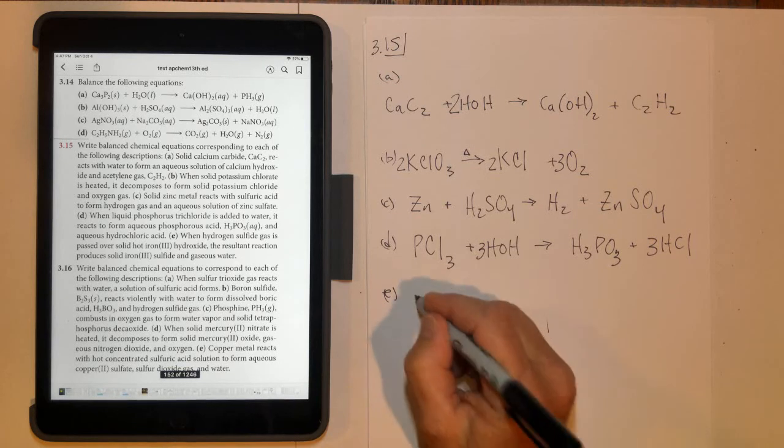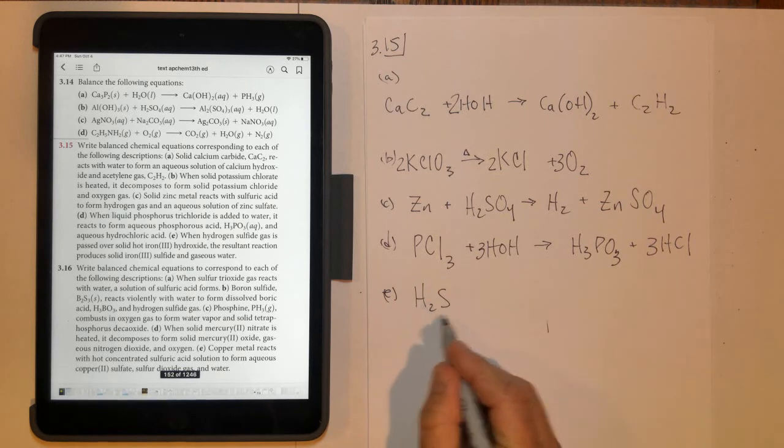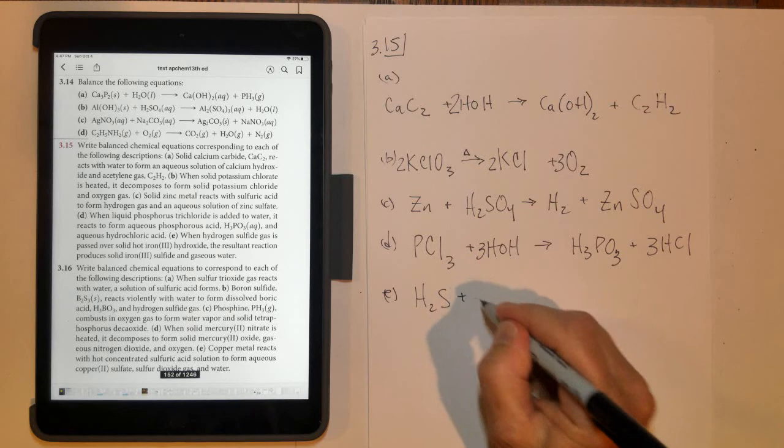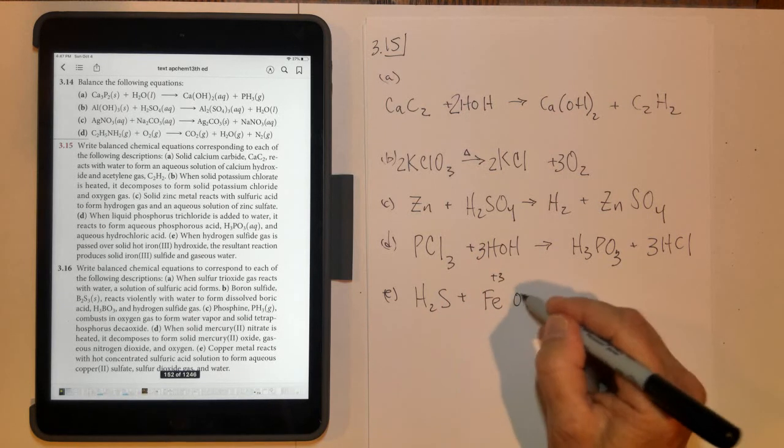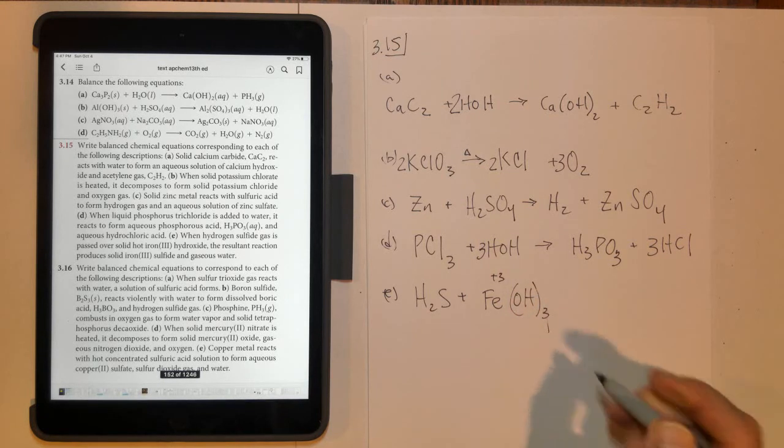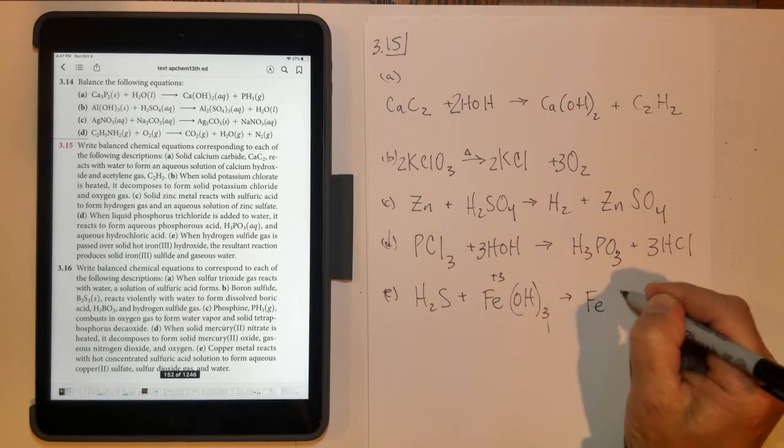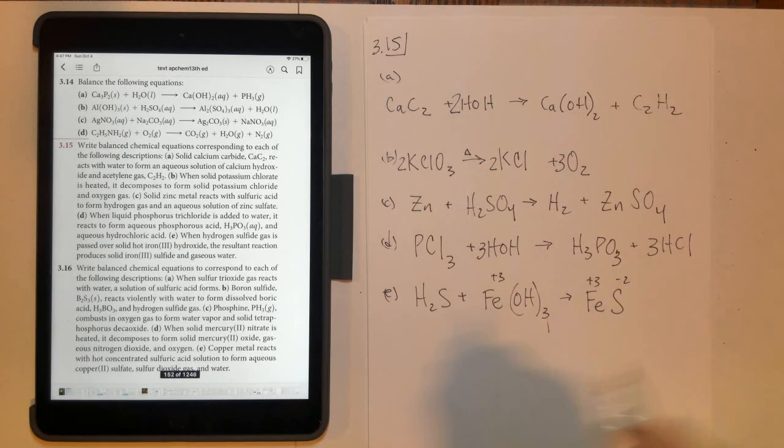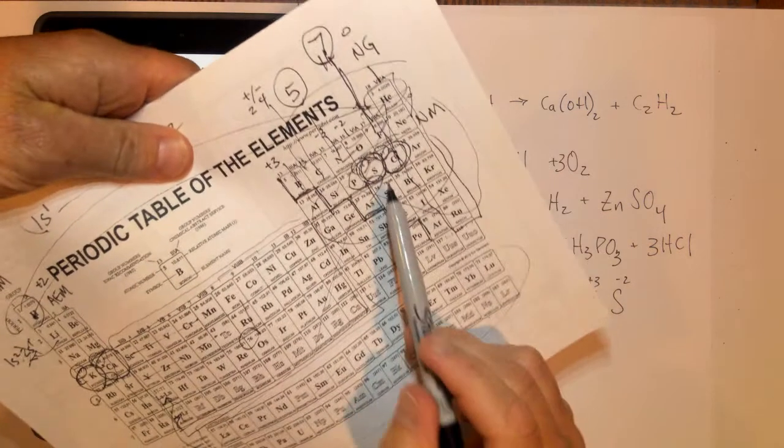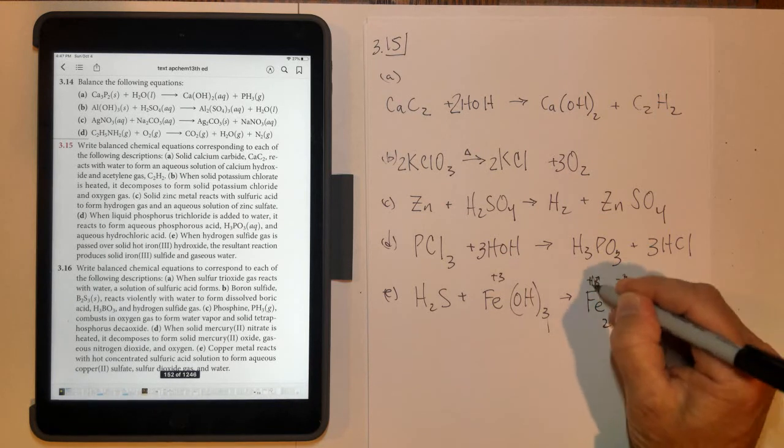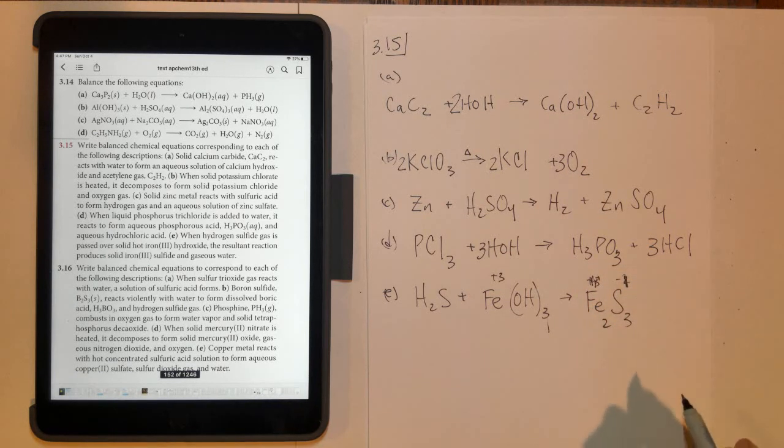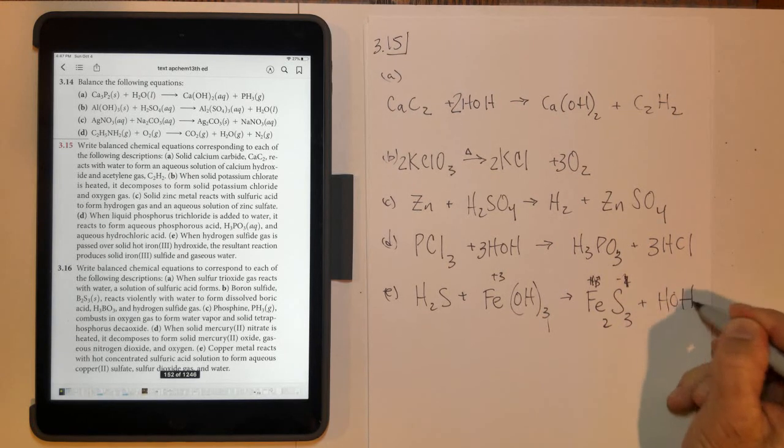Letter E, hydrogen sulfide gas, H2S, is passed over hot iron(III) hydroxide, Fe(OH)3. Don't forget the parentheses there. The resultant reaction produces iron(III) sulfide. Iron 3 is positive 3, sulfide's minus 2. Remember it's in group 16, so it's going to have a minus 2 charge. Crisscross those, 2 here, 3 here, so Fe2S3, the charges go away then. And gaseous water, H2O.